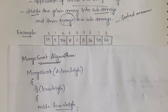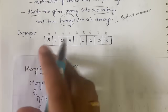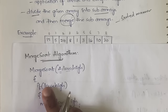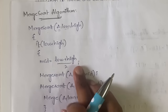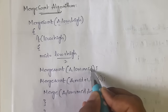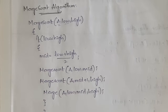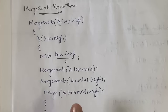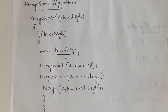Let me show you the merge sort algorithm first. MergeSort(A, low, high): low is the first index position and high is the last. If low is less than high, compute mid = (low + high) / 2, then recursively call MergeSort from low to mid and MergeSort from mid+1 to high. You keep performing these steps recursively as long as low is less than high, and then call the Merge function.